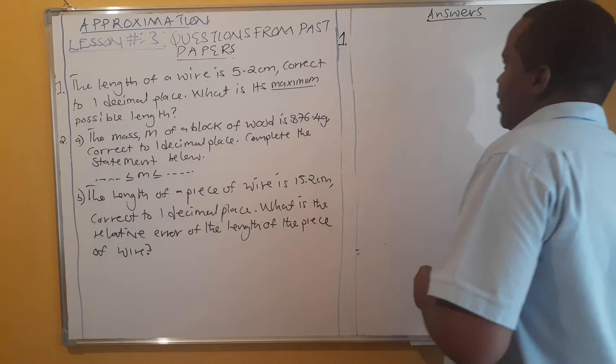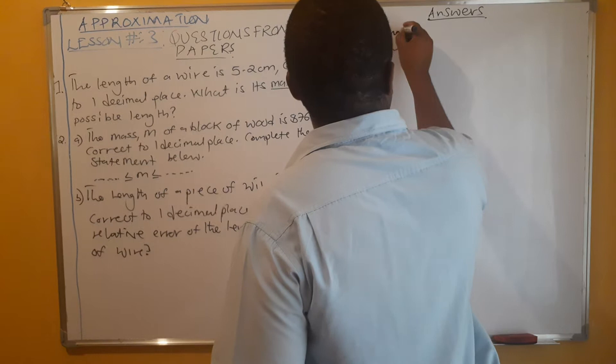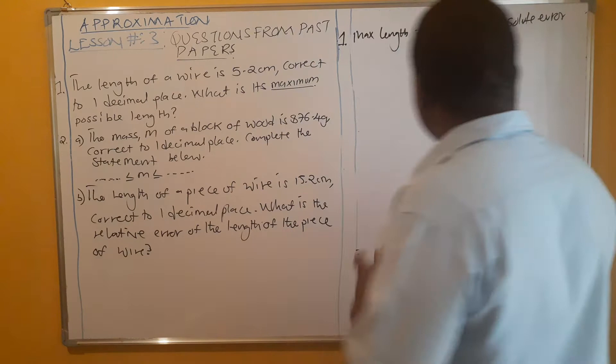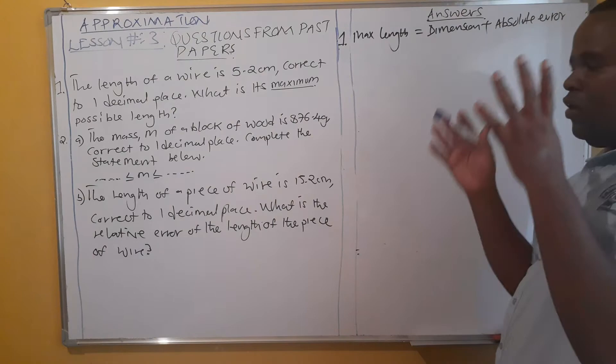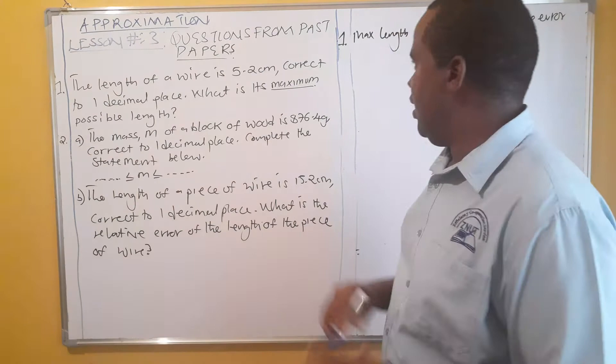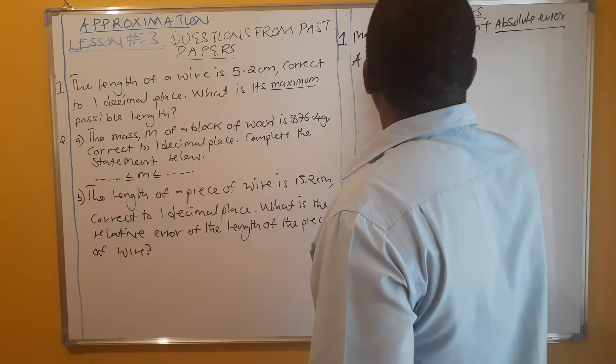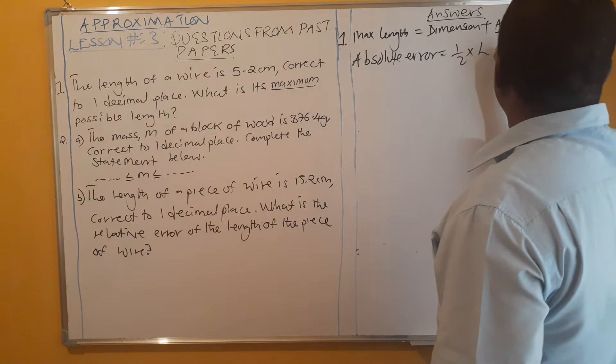The maximum possible length is equal to the given dimension plus the absolute error. We need to get the absolute error. Remember, we have only one dimension. There are two ways: where you have the true value and the recorded value — that's number one. Number two, where you only have one dimension like in this case. When we only have one dimension, the absolute error is equal to half times the least unit of measurement.